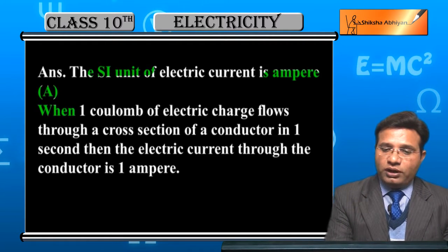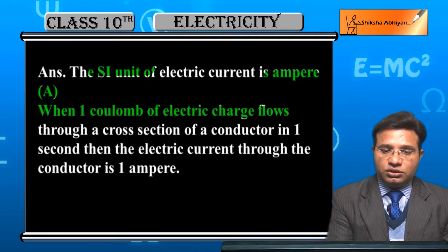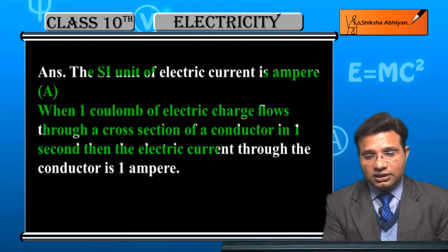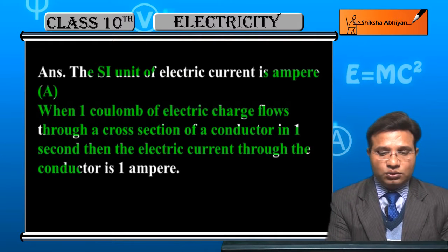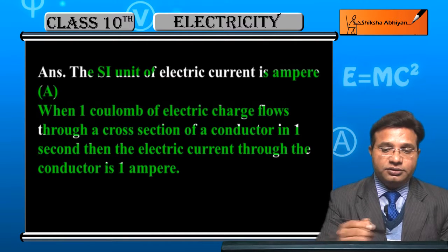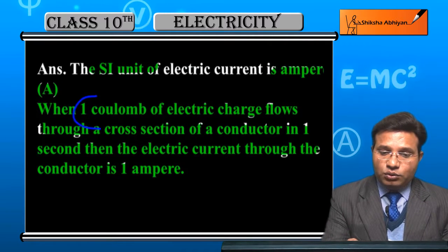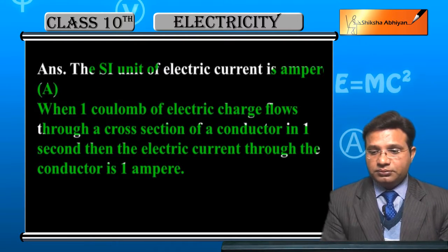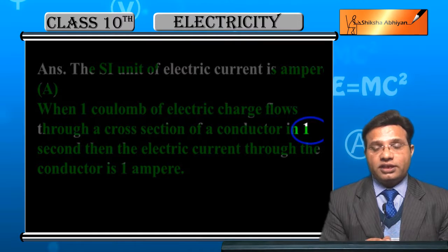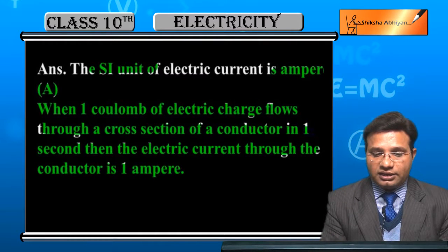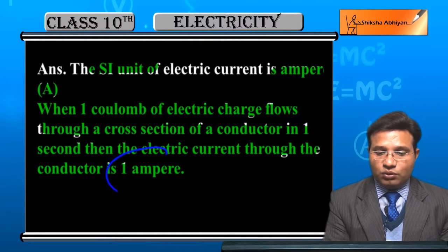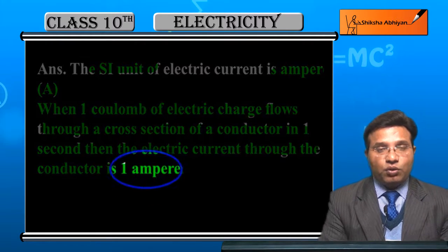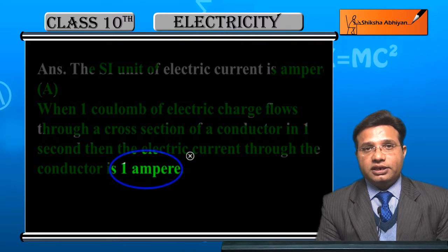How we can define Ampere: when one coulomb of electric charge flows through a cross section of a conductor in one second, then the electric current through the conductor is one Ampere. That is, when one coulomb of charge flows through a cross section of a conductor and the time taken is one second, then we say that the current flowing through the conductor is one Ampere. This is the definition for the unit of electric current.